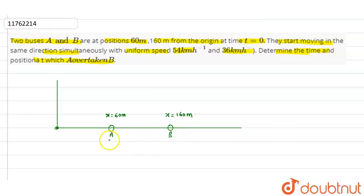If I have a velocity, VA is given in the question. It is 54 kilometers per hour. If you multiply by 5 by 18, it is 15 meters per second.